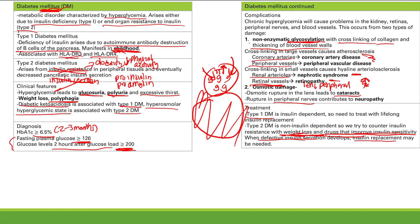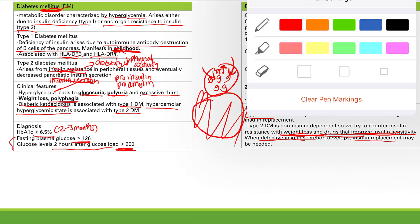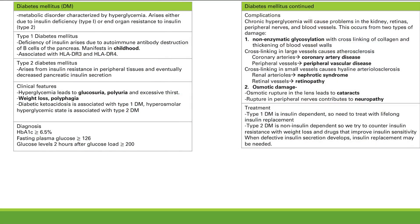That's it for diabetes mellitus — super high yield for Step 1 and for real life. Make sure you know all of this. Now we're going to go into the complications of hyperglycemic crisis — acute crises from hyperglycemia. There are two of them: type 1 is associated with diabetic ketoacidosis, and type 2 with hyperosmolar hyperglycemic state.